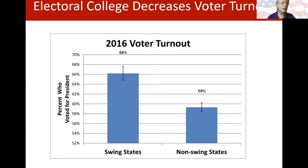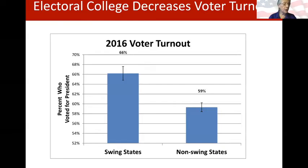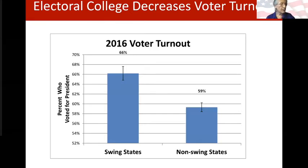Perhaps the most disturbing aspect of the Electoral College system is that it creates a disincentive to vote for citizens living in non-battleground states, which is the majority of people in our country. If you live in California or Mississippi, why bother going out on a cold or rainy day to vote when you know your state will go blue or red anyway? The data from 2016 bears this out: the percentage of eligible voters who cast a vote for president was significantly lower in non-swing states compared to swing states.